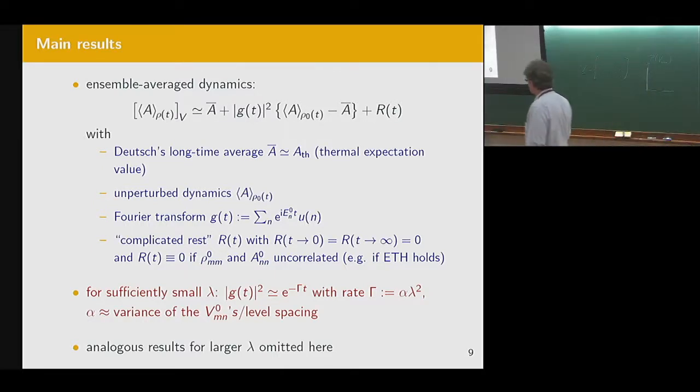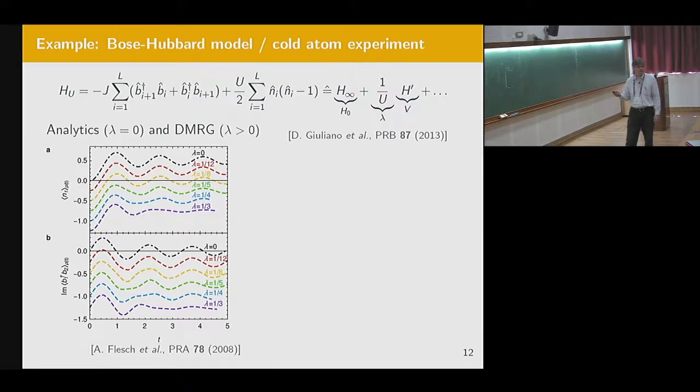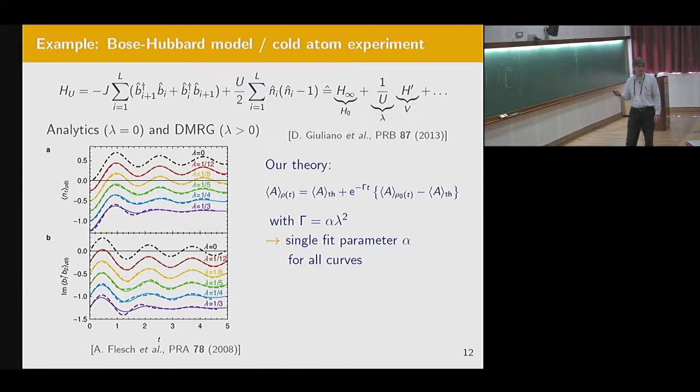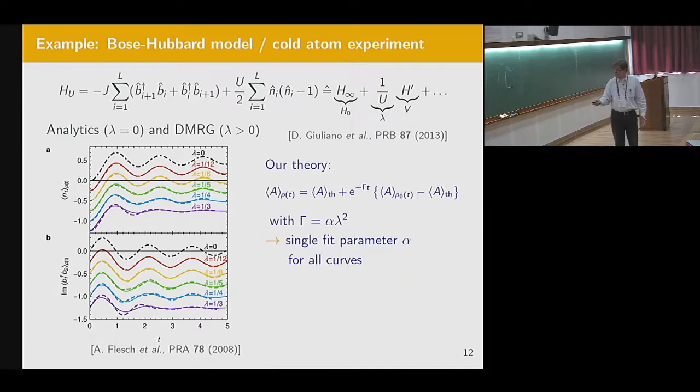It's the perturbation strength, the variance of the matrix elements divided by the level spacing, and the two pi. It is computable, but we could not find the values in this published work. They happen not to tell us the values. They were not interested in these things. They were not interested in this random matrix. They did the DMRG simulation here. Maybe they could not even give it to me with the DMRG approach. But in principle, it would be computable, but in practice, it is not available to us.